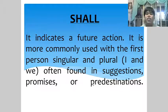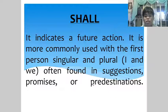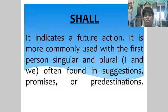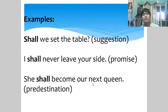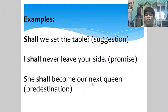'Shall' indicates a future action. It is more commonly used with the first person singular and plural — I and we — and is often found in suggestions, promises, or predestinations. Examples: 'Shall we set the table?' — suggestion. 'I shall never leave your side' — promise. 'She shall become our queen' — predestination.